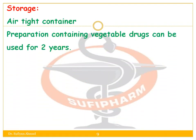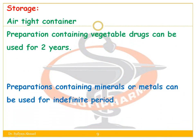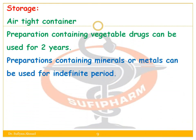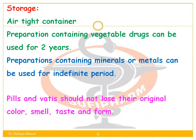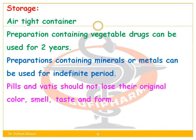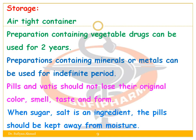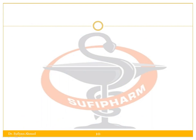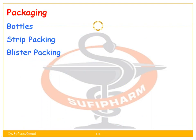The pills are then dried in shade or sun. Storage condition: airtight container. Preparations containing vegetable drugs can be used for two years; preparations containing minerals and metals can be used for an indefinite period. The pills should not lose their original color, smell, taste, or form. When sugar or salt is an ingredient, the pills should be kept away from moisture. Packing: bottles, strip packing, and blister packing.